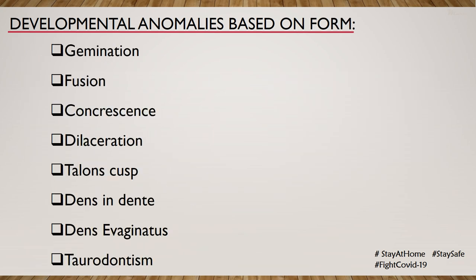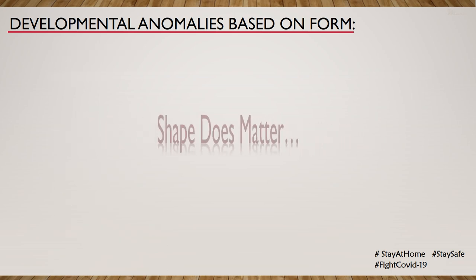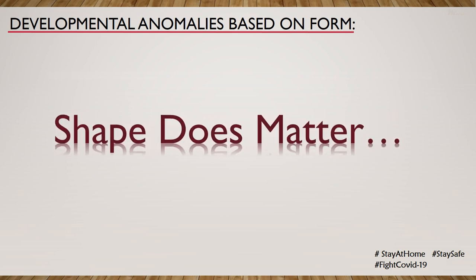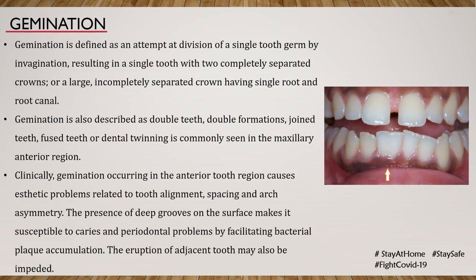The next set of developmental anomalies relates to the form of the tooth. A variety of anomalies have been described including gemination, fusion, concrescence, dilaceration, talon's cusp, dens indentae, dens invaginatus, and taurodontism. Does it really matter if the morphology of the tooth is affected? Yes, and we will discuss each one by one.